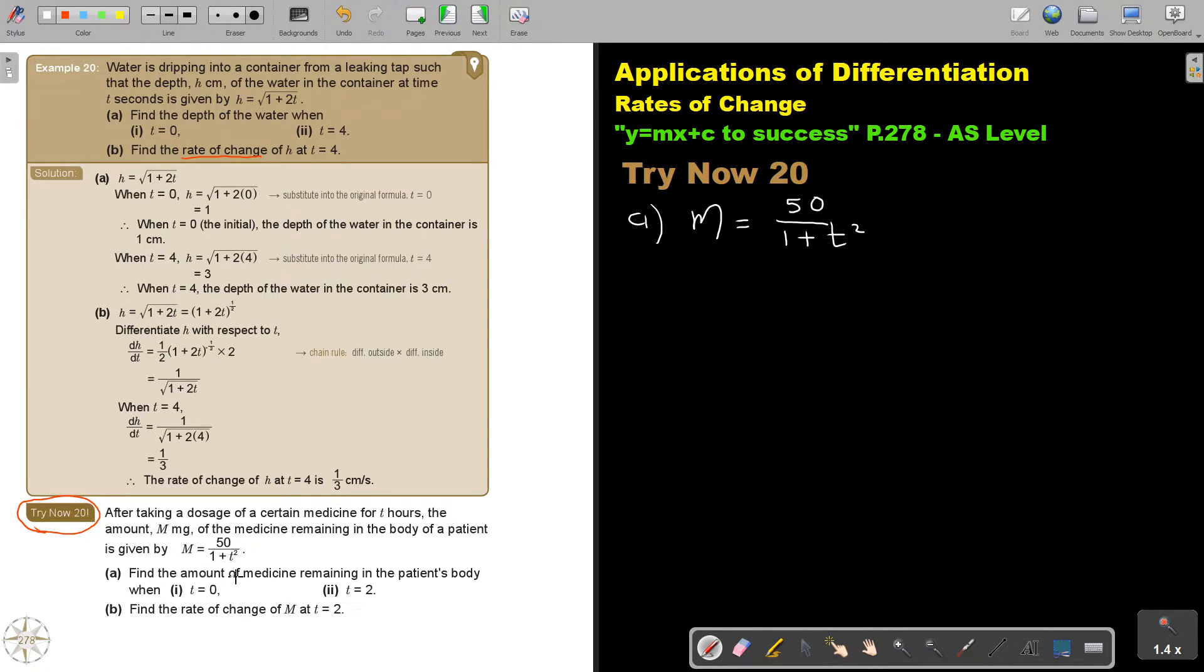Now, find the amount of medicine remaining in the patient's body when t is 0. So this is just substituting in the equation. And that will just be 50. So the amount of medicine remaining is 50 milligrams. We continue. This was the first one.